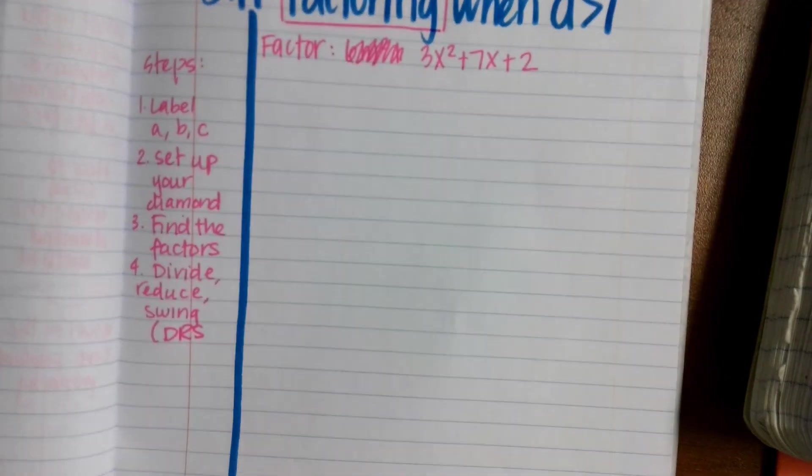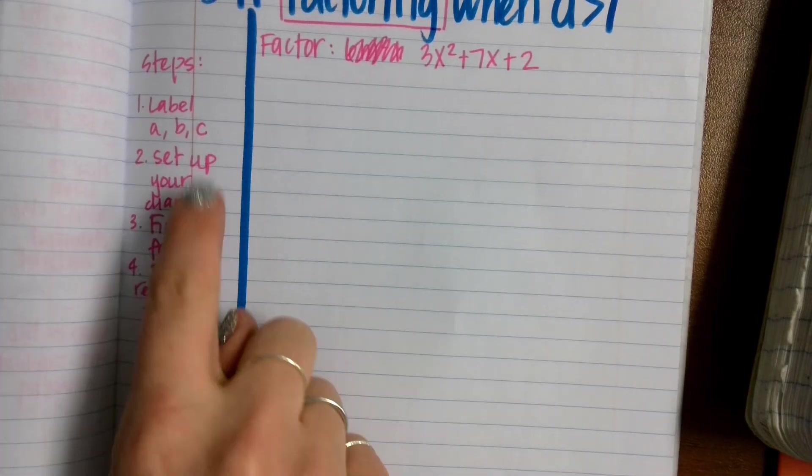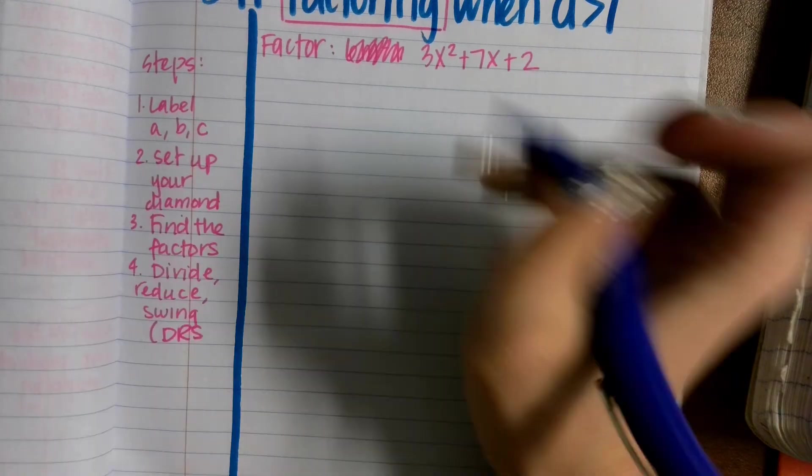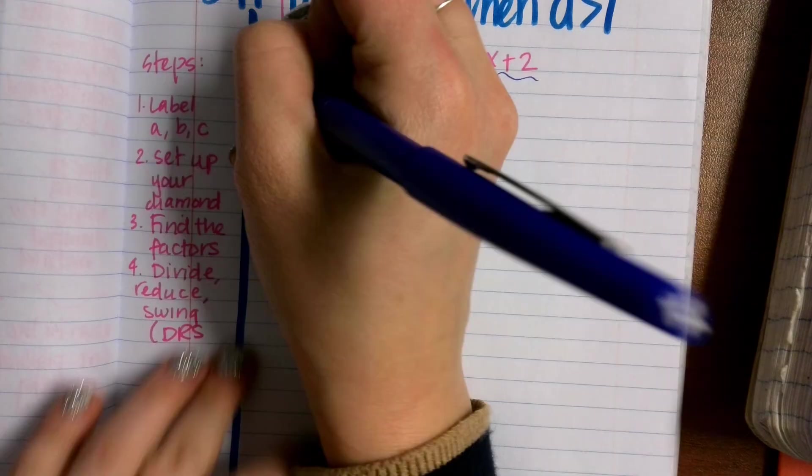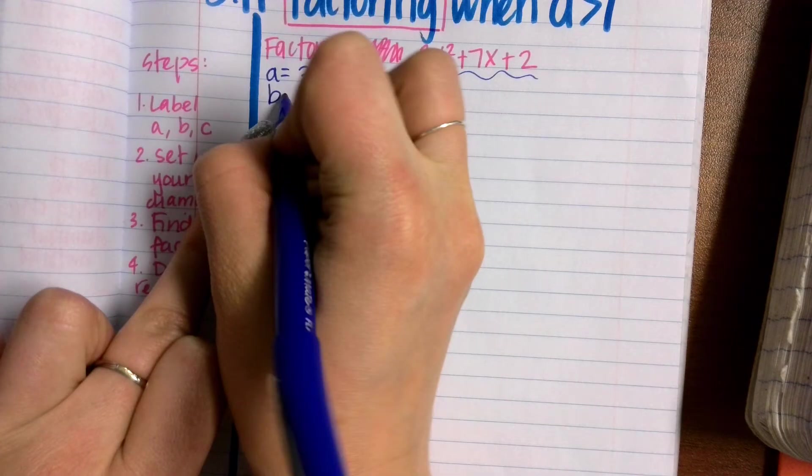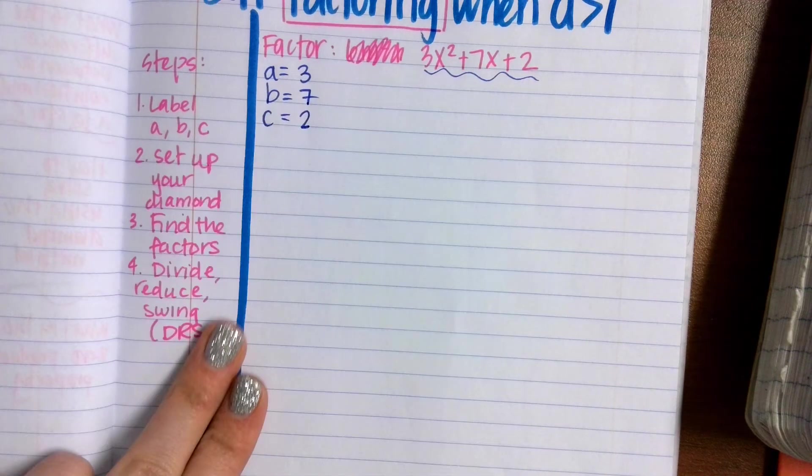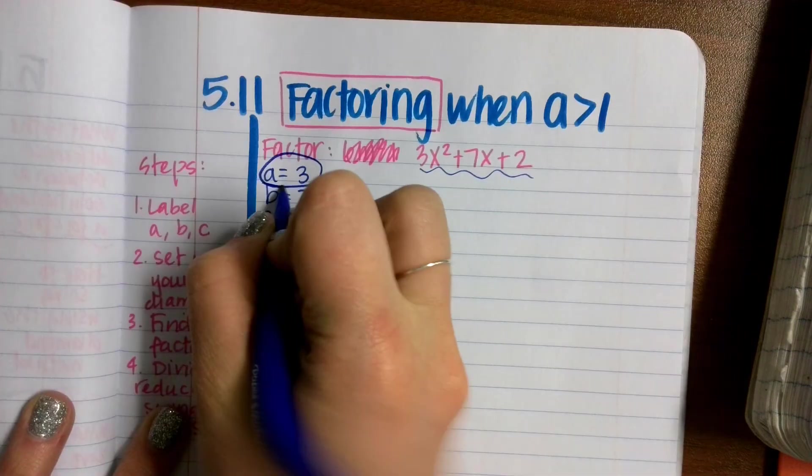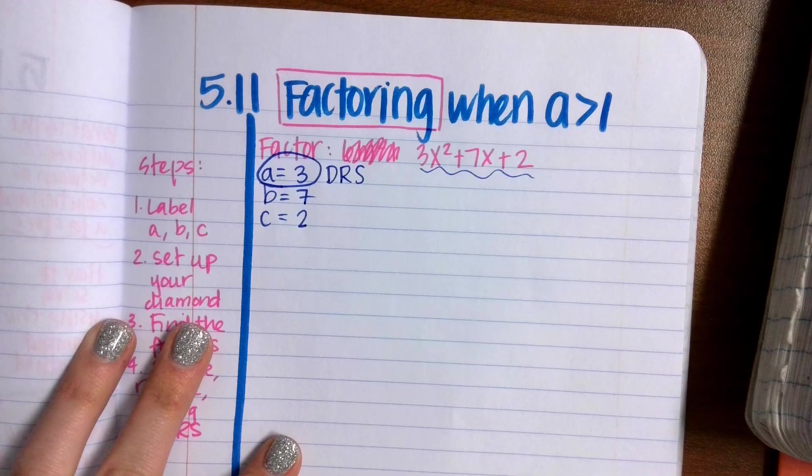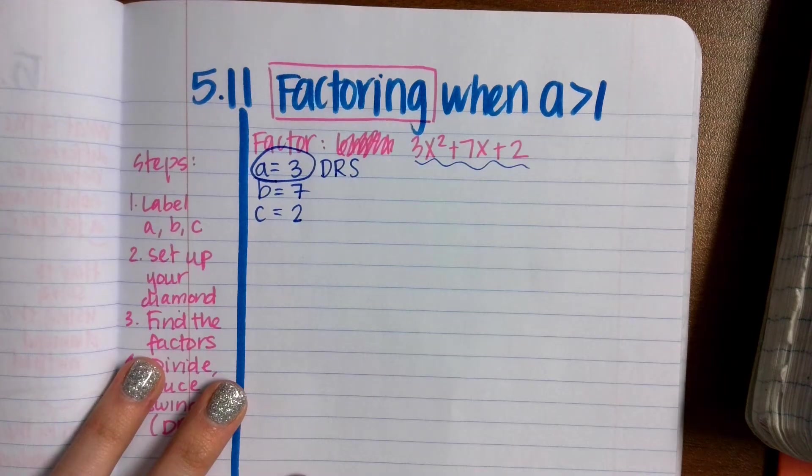Step 1 says to label our A, our B, and our C. For this example right here, my A equals 3, my B equals 7, my C equals 2. Please circle that your A equals 3, and please write DRS next to that, so that way we are reminded that we are divide, reduce, and swing for this, rather than doing our normal way.